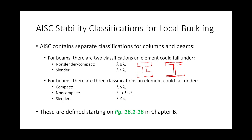All things being equal, assume both shapes have the same moment of inertia, same cross-sectional area, and therefore the same radius of gyration. It would seem they'd have the same capacity. But that doesn't make sense from a local buckling perspective — the thinner-element section would be weaker because its elements are thinner. So this classification is checking that thinness of the flanges and the web. For columns, there are two limits; for beams, there are three limits.